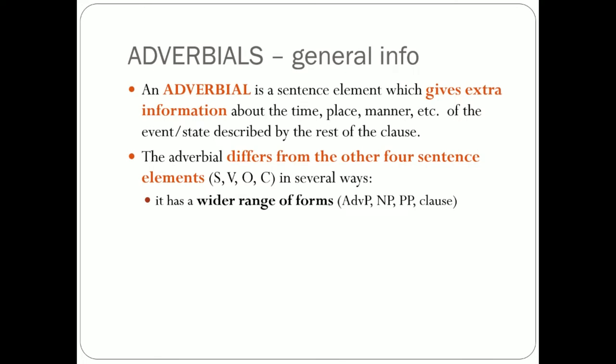Subjects, verbs, objects, and complements are usually just one or two types of phrases and a clause. The subject is either a noun phrase or a nominal clause; the verb phrase is the only thing that can function as a verb; objects are typically noun phrases or clauses. For adverbials you have multiple possibilities: adverb phrases, noun phrases, prepositional phrases, and clauses. On top of that, unlike subject, verb, object, and complement, adverbials can appear in many positions. You know the word order in English is fixed — you cannot create an SOV sentence unless you're Yoda — but with adverbials you can easily put them in multiple positions.